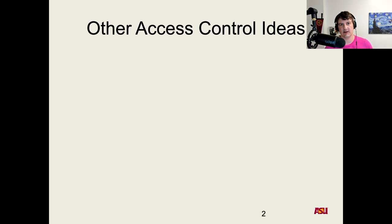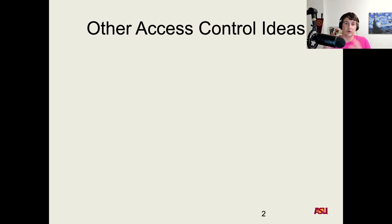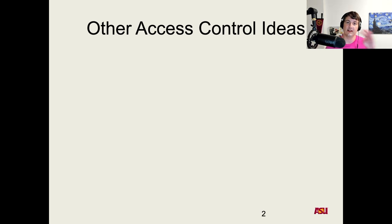We've looked at how the Unix and POSIX model of access control list works, and that's super important. But we want to talk about other types of ideas, because that's not the only type of model. The permissions there are very coarse-grained because you can only give read or write access to either your user, your group, or everyone else. To do that precisely with least privilege in mind involves creating a lot of groups and can be very complicated. But there are other kinds of ideas in access control.